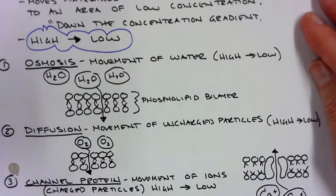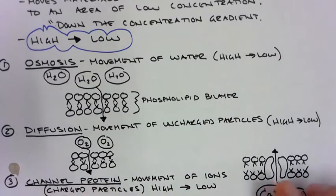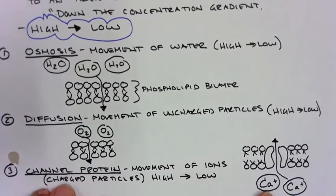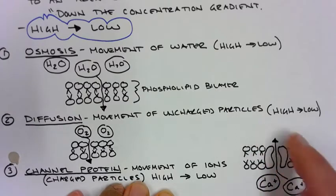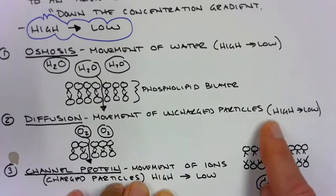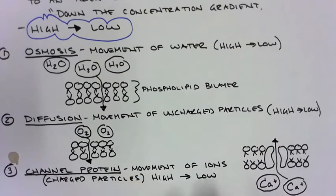The last one is something called a channel protein. Think of a channel. So this is a channel. And this is how ions move. It can also be called an ion channel sometimes. Ions have a charge to them. So for example, we have calcium here. There's a lot of calcium on this side. No calcium on that side. They're going to flow right through that. So those are the three basic types of passive transport.